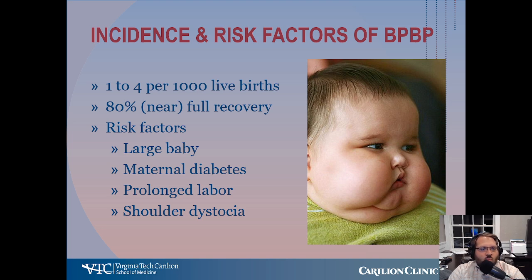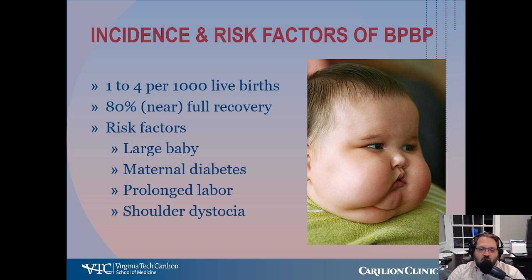Going over the incidence and risk factors for brachial plexus birth palsy: the incidence is about 1 to 4 per 1,000 live births. About 80% are transient and will have near full recovery of neurological function. Risk factors include macrosomia or the baby being large, maternal diabetes — those two go hand in hand — prolonged labor. And the most important risk factor is a shoulder dystocia where the baby's head is delivered and the shoulders are unable to be delivered.